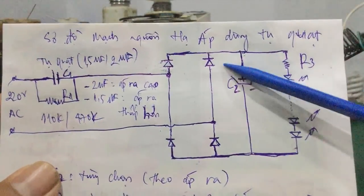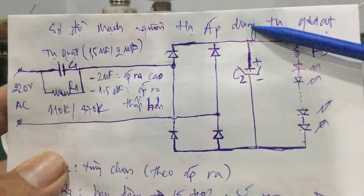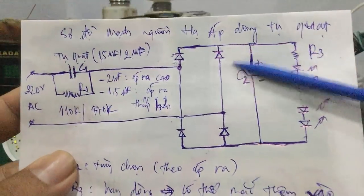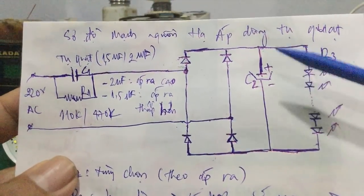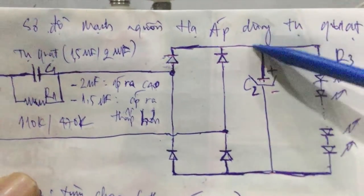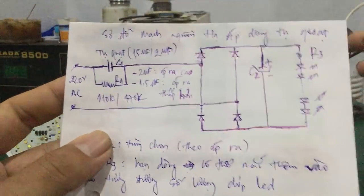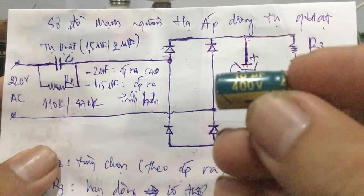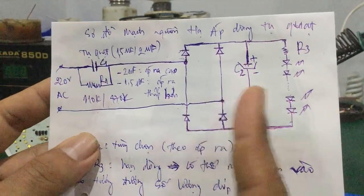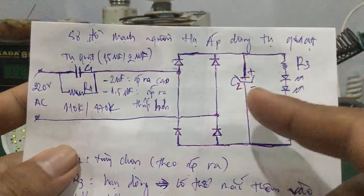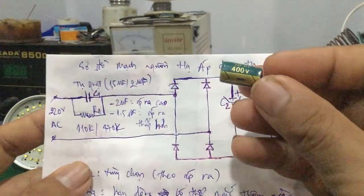Tụ lọc nguồn ngõ ra là tụ C2. Tùy vào điện áp sau chỉnh lưu mà chọn giá trị C2. Nếu điện áp sau chỉnh lưu là khoảng 200VDC, thì chọn C2 là 6.8 microfarad, điện áp làm việc khoảng 250V hoặc 400VDC. Cái điện áp làm việc của tụ C2 phải cao hơn điện áp ngõ ra. Nếu nhỏ hơn hoặc bằng sẽ gây lỗi, nổ tụ hoặc phồng tụ.